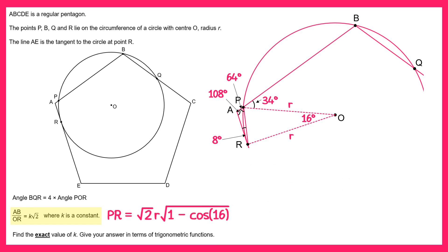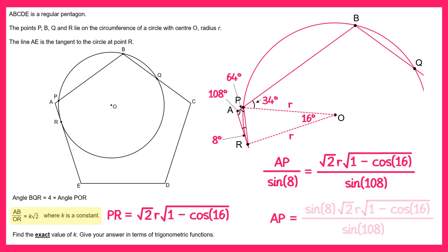And then we're going to focus on the small triangle PAR. We're going to use the sine rule on this triangle to try and find the length of AP. So we'd say AP divided by sine 8 equals the length PR which we now know to be this divided by sine of 108. So if you rearrange this by multiplying by sine 8 you get AP equals all of this divided by sine 108.